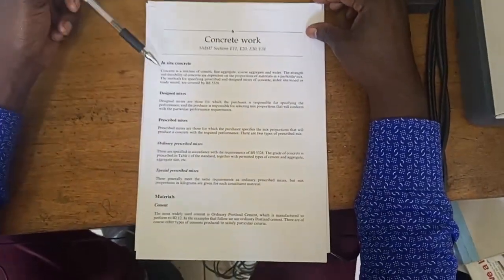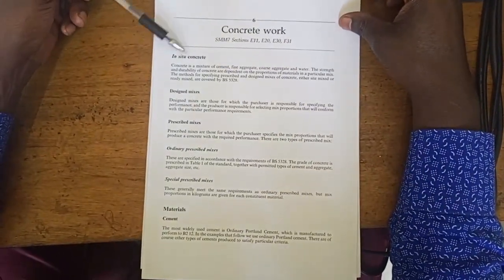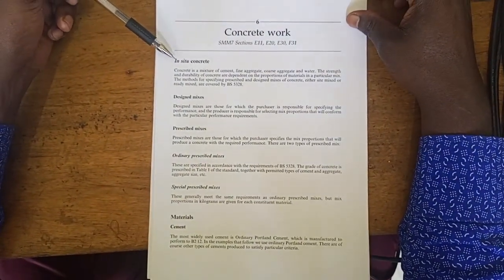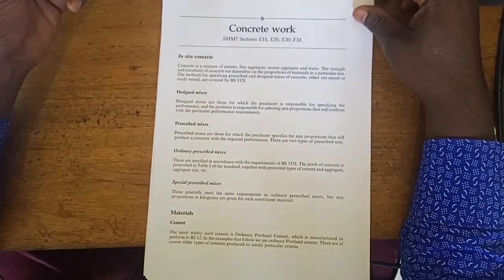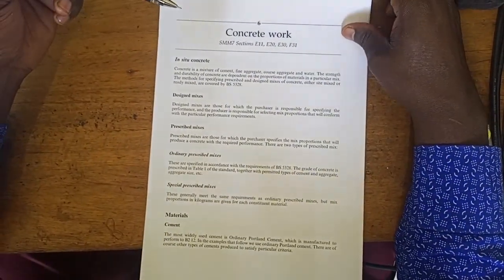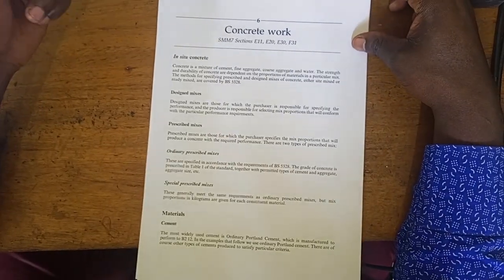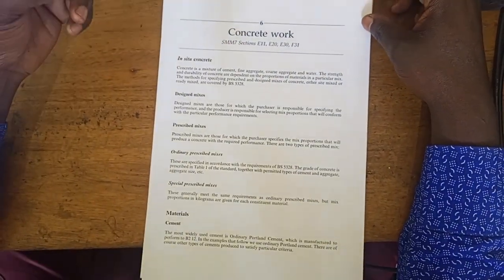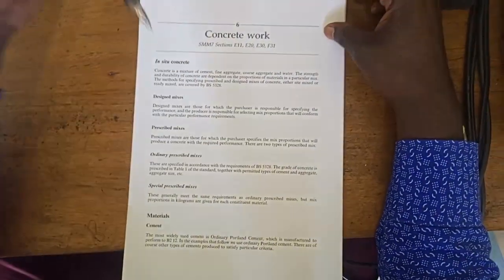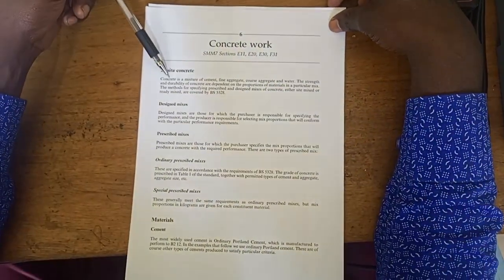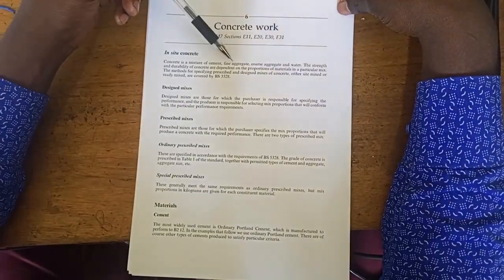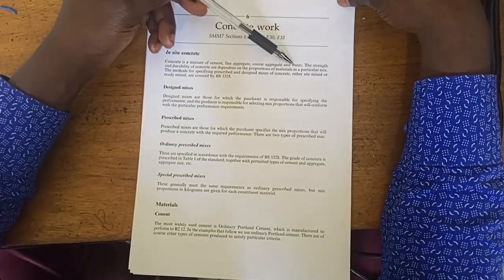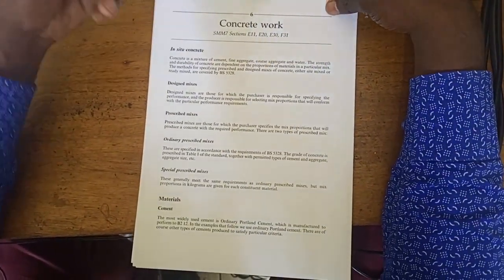What happens is that we've got what is called in-situ concrete mix. In-situ, this is the kind of concrete that you mix on site and it is placed as a liquid into the formwork so that it forms the desired member, be it a base, a beam, or a column. Concrete is a mixture of cement, fine aggregates, coarse aggregates, and water.